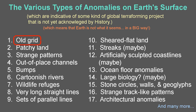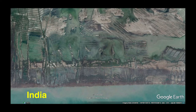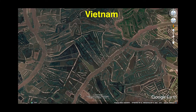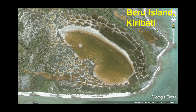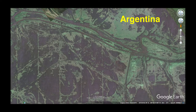First up: old grid. I'm using this term to describe any grid or polygonal pattern of ditches, grooves, mounds, vegetation, or low walls that appears to be old and often in disrepair.